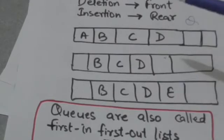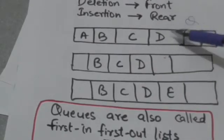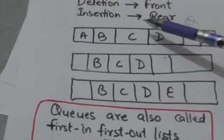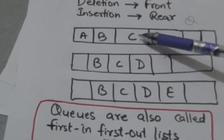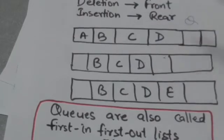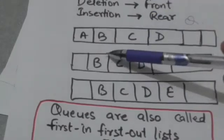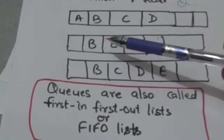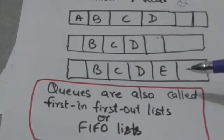Now suppose we have to delete an element from this queue. A is the front element of this queue, so we can delete only A. After deletion of A, B is the front element of this queue.